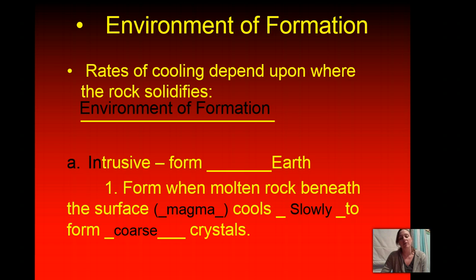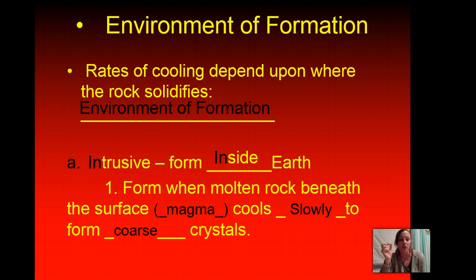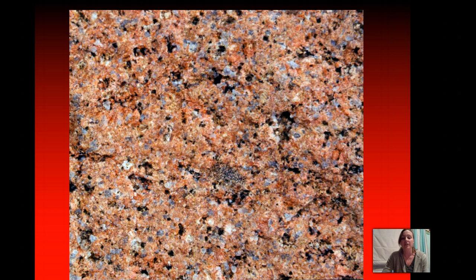The lava that hardens inside the ground is intrusive — it forms inside the earth. Notice we've highlighted the word 'in' in both words so you can link it in your mind and remember it more easily. Intrusive rocks form when the magma hardens inside the earth, and it cools slowly so that it has time to form large crystals. Here's a picture of large crystals — this had to have been formed underground as magma, hardening, because we can see those large crystals.